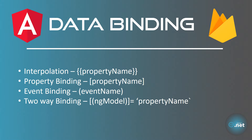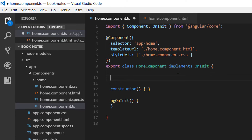The last type is two-way binding, where we bind a field on the view with a property on the component, and changing the value in the view also changes the property. We'll cover interpolation, event binding, and two-way binding in this part, and property binding in an upcoming part. Let's go to the home component.ts file.